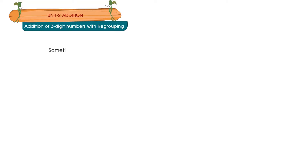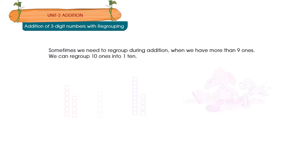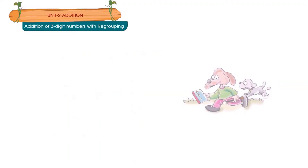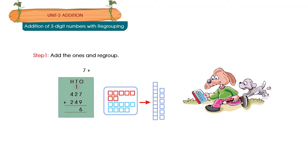Addition of 3-digit numbers with regrouping. Sometimes we need to regroup during addition. When we have more than 9 ones, we can regroup 10 ones into 1 ten. For example, 9 plus 5 is equal to 14. Let us add numbers 427 and 249. Step 1: Add the ones and regroup. 7 plus 9 is equal to 16 ones, which equals 1 ten and 6 ones.